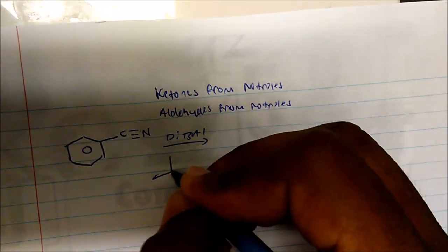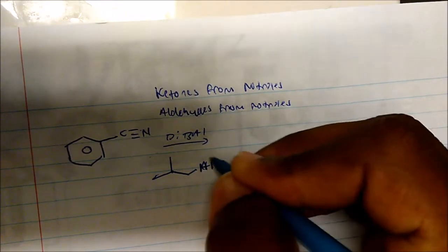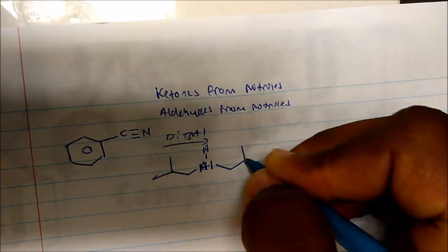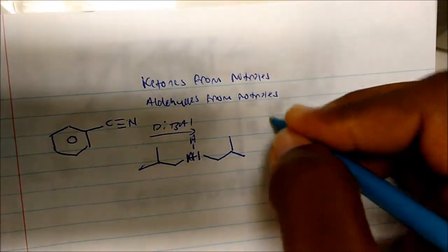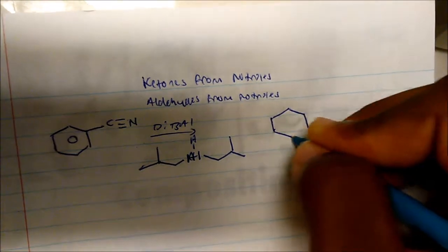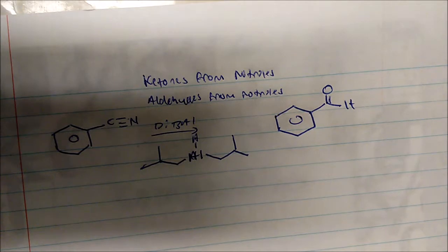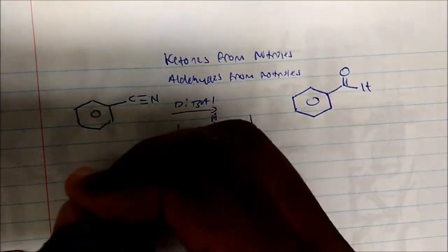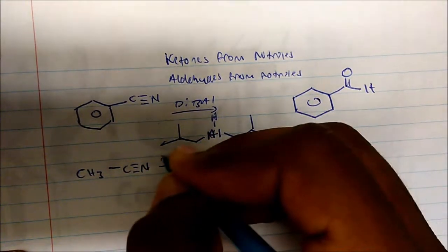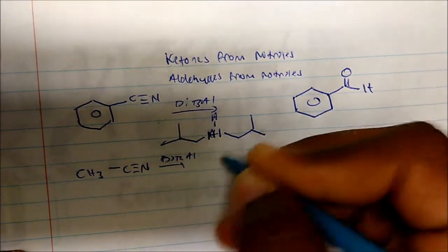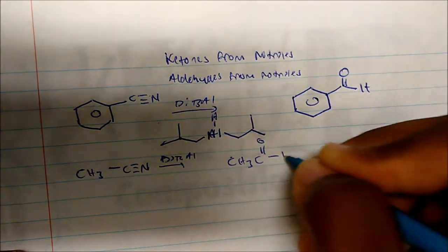If you're curious about the structure, it looks something like this — aluminum bonded in the middle with a hydrogen atom. If I take a nitrile and DIBAL, I get the aldehyde. So if I take acetonitrile and add DIBAL, I get the aldehyde: CH3C with one H.